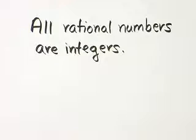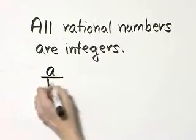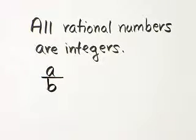Are all rational numbers integers? In other words, is this statement true or false? Well, remember the definition of a rational number? Any number that can be written in the form A over B, where A and B are integers and B is not 0.